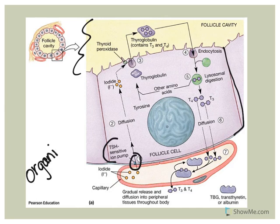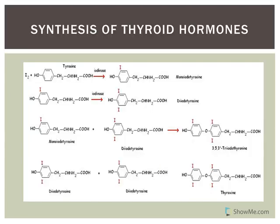You don't need to memorize the structures, but it's helpful to be aware of them. When one iodine is placed on a tyrosine, it's referred to as monoiodotyrosine, or MIT. When two iodines are attached, it's called diiodotyrosine, or DIT. These two forms are used to make T3 and T4 through a process referred to as coupling.